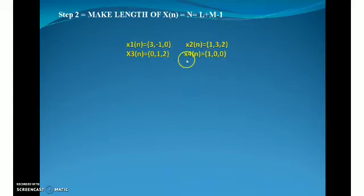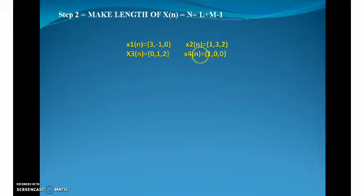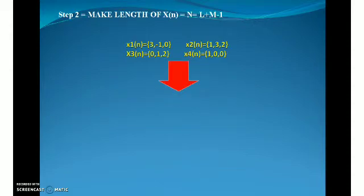Next is step two, a very important step. I am going to take x1, x2, x3, and x4 and make their length to N, which is equal to L plus M minus 1. Here L = 3 and M = 3, so N = 3 + 3 - 1 = 5. I have to make x1, x2, x3, and x4 to a length of 5.